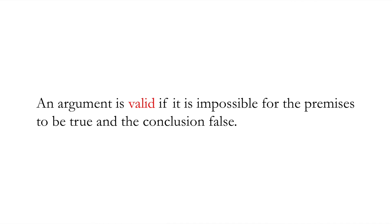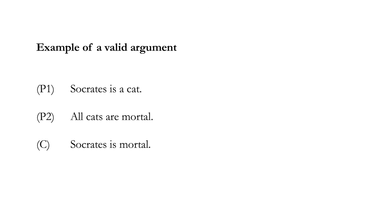Validity means it's impossible for the premises to be true and the conclusion false. It doesn't matter whether the premises are in fact true — what matters is whether it's possible for them to be true and yet the conclusion false. Here's an example of a valid argument: premise one, Socrates is a cat; premise two, all cats are mortal; conclusion, Socrates is mortal. It's valid because it's impossible for the premises to be true and the conclusion false.